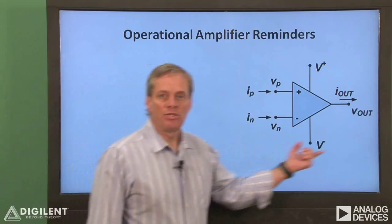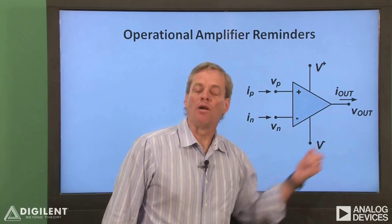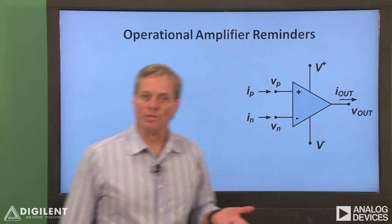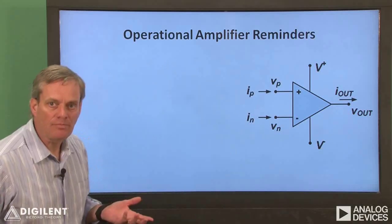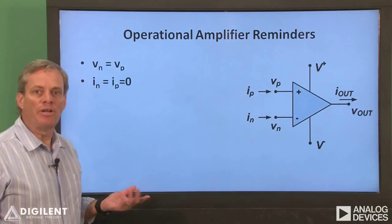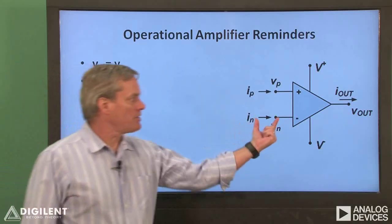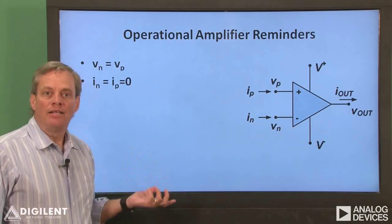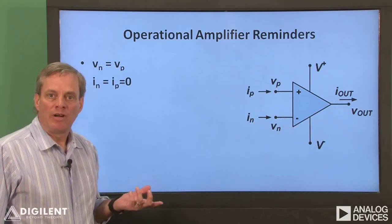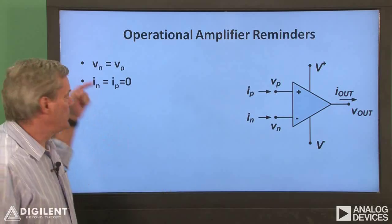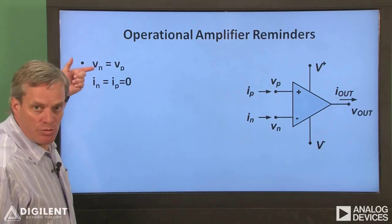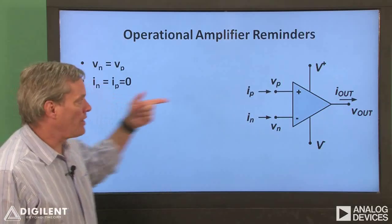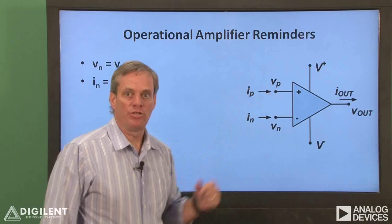The op-amp circuit schematic symbol is shown here. Op-amps typically have five or more terminals. The operational amplifier has two inputs and one output terminal. The ideal operational amplifier rules are that there is no voltage difference between the input terminals and no current flowing into the input terminals.